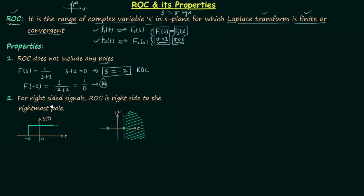The second property states: for right-sided signals, the region of convergence is to the right of the rightmost pole. Right-sided signals are those which extend from some finite value of time to plus infinity. If the transfer function has two poles, the rightmost pole is the one furthest to the right in the s-plane, and the ROC will exist on the right side of that rightmost pole.